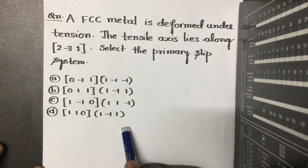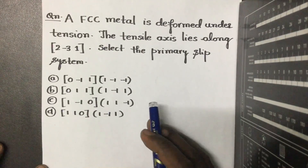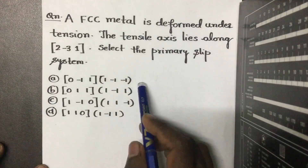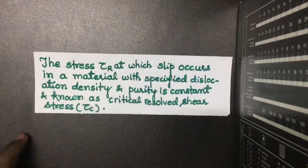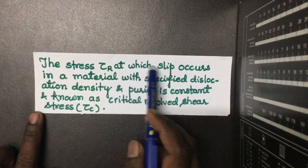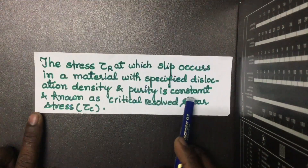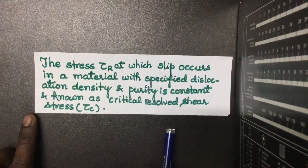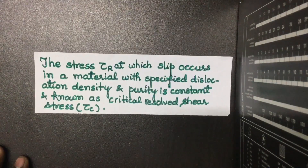To move a dislocation, a certain stress must be applied to overcome the resistance to dislocation motion. To solve this problem, you must know about the critical resolved shear stress. The critical resolved shear stress is the stress at which slip occurs in a material with a specified dislocation density and purity — it is a constant value.